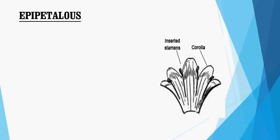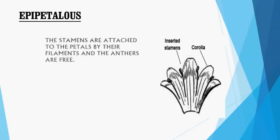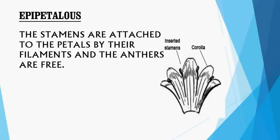The first type is epipetalous. In this condition, the stamens are attached to the petals by their filaments, and the anthers are free. This condition is called epipetalous.